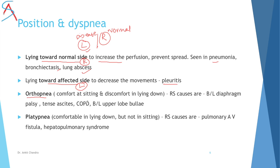Orthopnea means the person is comfortable sitting but cannot lie down, as in bilateral diaphragm palsy, but also in ascites, COPD, or bilateral upper lobe disease. Platypnea is the opposite — the person is comfortable lying down but not in a sitting position.